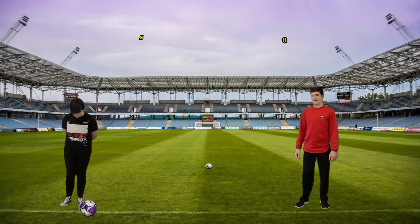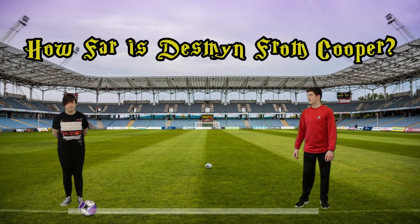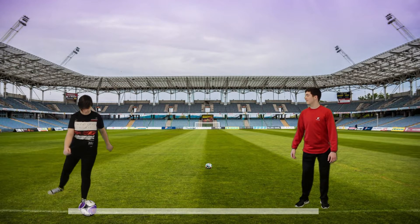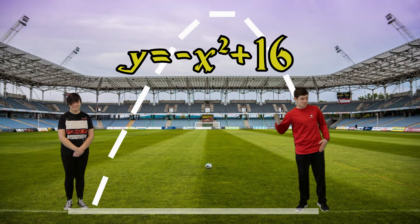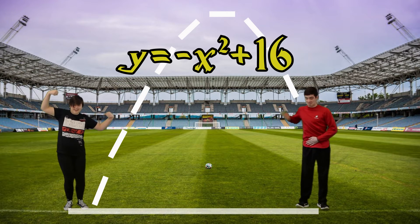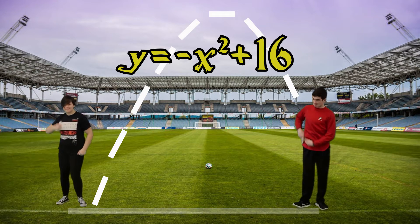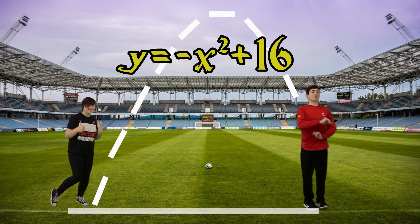On today's story problem, how far is Desmond from Cooper? Desmond kicks the soccer ball in the shape of the equation y equals negative x squared plus 16, where y is height in feet and x is distance in feet.